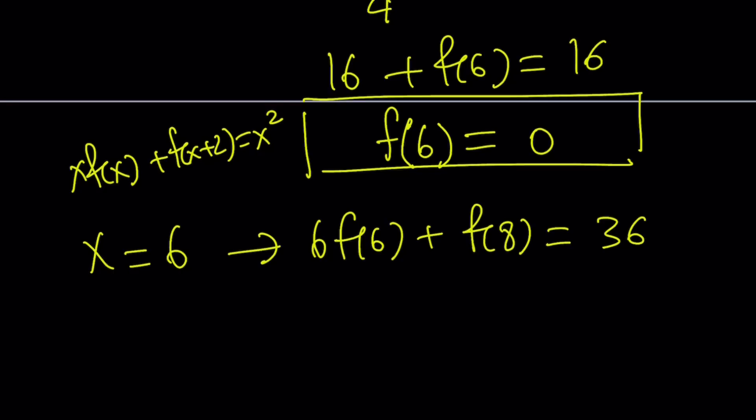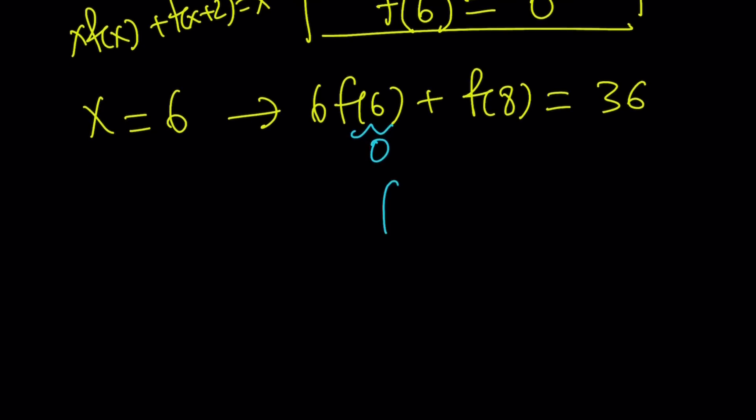Now we do know that f of 6 is equal to 0, right? And then if you plug it in, you're going to get a 0. And from here, f of 8 is going to be 36. All right?